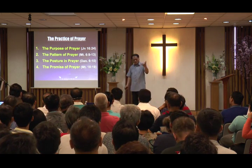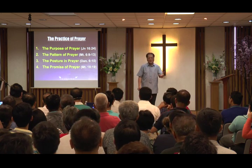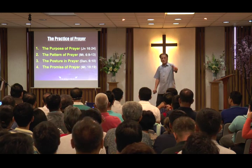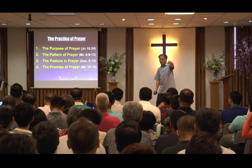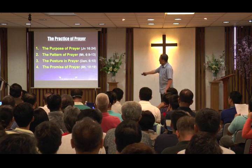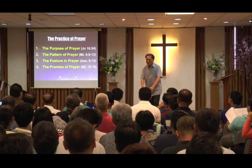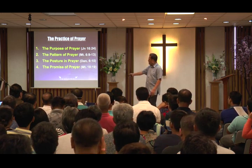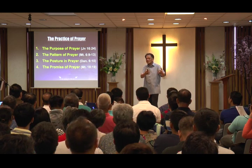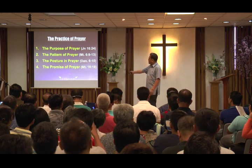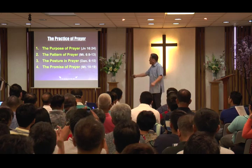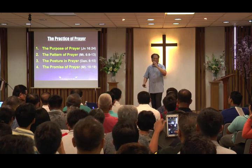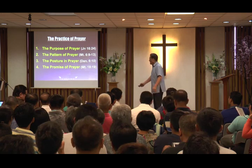The posture of prayer from John 16:24 — 'ask and you will receive' — is okay. The pattern of prayer from Matthew 6 — adoration, confession, thanksgiving, supplication — that's fine. But the posture from Daniel 6:10 — 'Daniel knelt down' — is a problem. Daniel 6 is a narrative; it's descriptive material. We cannot make it prescriptive. You cannot say kneeling is the correct way to pray just because Daniel did it.